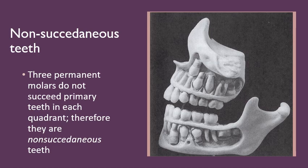So what does this mean exactly? In this picture you can see the first permanent molar. This permanent molar has no primary predecessor — there was no deciduous molar present here, and it erupted without the presence of any primary tooth, so it is a non-succedaneous tooth. Similarly, the second permanent molar and the third permanent molar are also non-succedaneous teeth because they do not replace any primary predecessors.